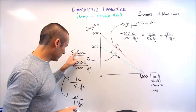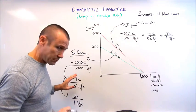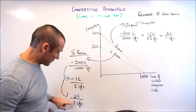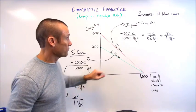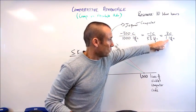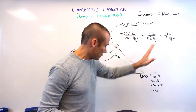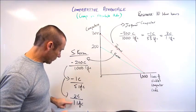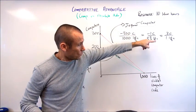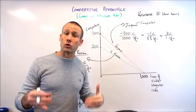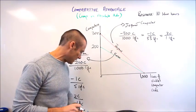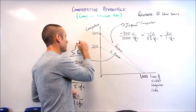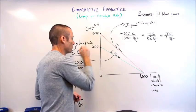Jumping over to South Korea — for lines of code: when South Korea makes one line of code, they give up 0.2 computers. When Japan makes one line of code, they give up 0.3 computers. So it's easy once I've done those proportions: South Korea gives up 0.2, Japan gives up 0.3. South Korea is the lowest cost producer — South Korea has the comparative advantage in lines of code and should make lines of code.